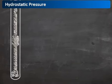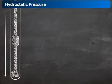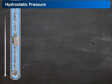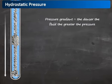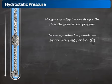We have now seen how vertical depth and the density of fluid affects the pressure at the bottom of a well, and it is the combination of these two factors that give us our primary barrier and thus our well control. To simplify the calculation for finding out the hydrostatic pressure at the bottom of the well, a pressure gradient is used. This simply means that the denser the fluid, the greater the pressure, and this can be expressed as pounds per square inch per foot, abbreviated to psi per foot.